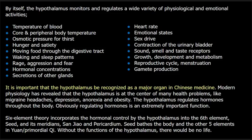By itself, the hypothalamus monitors and regulates a wide variety of physiological and emotional activities. There's a long list: temperature of blood, core and peripheral body temperature, osmotic pressure for thirst, hunger and satiety, moving food through the digestive tract, waking and sleep patterns, rage, aggression and fear, hormonal concentration, secretions of other glands, heart rate, emotional state, sex drive, contraction of the urinary bladder, sound, smell and taste receptors, growth, development of metabolism, reproductive cycle, menstruation, and gamete production. Imagine everything that the hypothalamus is touching and regulating.